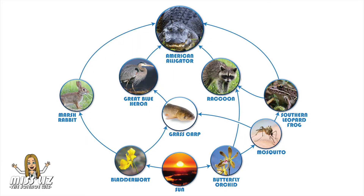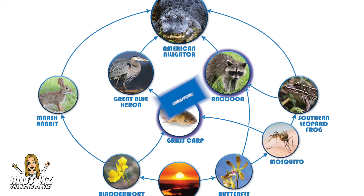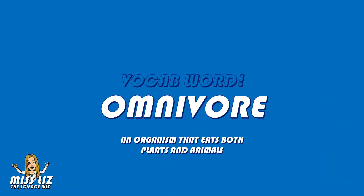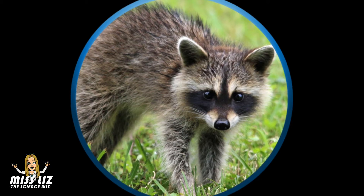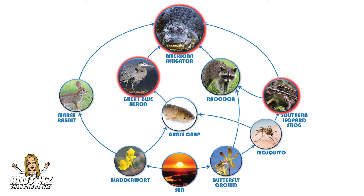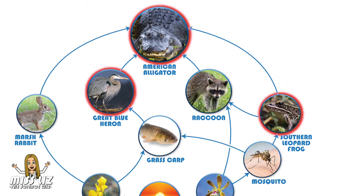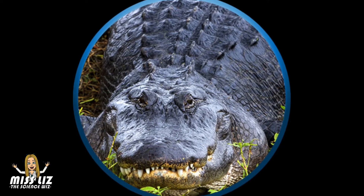Some organisms don't get enough energy from plants alone so they also eat other animals. These organisms in purple we call omnivores. An omnivore is an organism that eats both plants and animals. There are a few organisms that do not eat plants at all — these organisms seen in red we call carnivores. A carnivore is an organism that only eats animals. Carnivores are usually called tertiary consumers and make up the top levels of the energy pyramid.